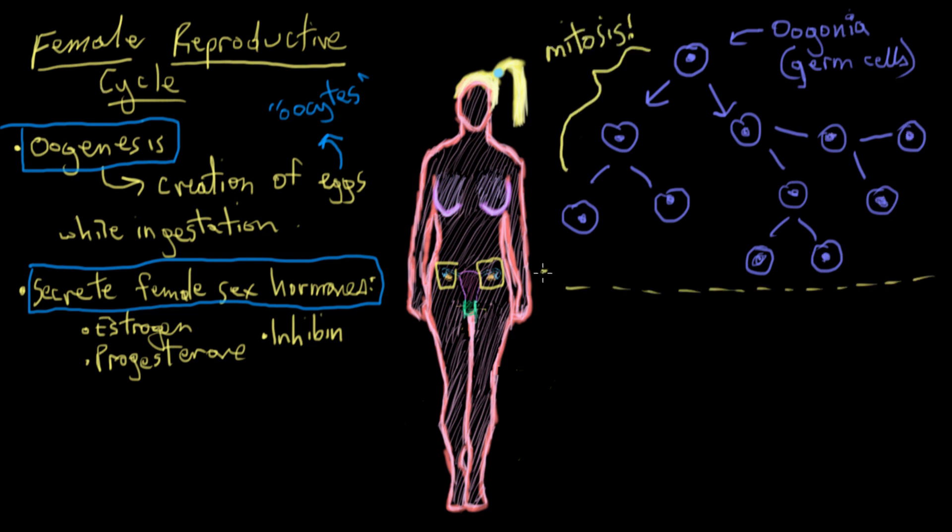Then, at about the seventh month of development, these divisions stop, and all the ones that have been produced, which is actually about two to four million, are all she'll have for the rest of her life, and that turns out to be about one to two million per ovary.